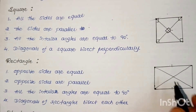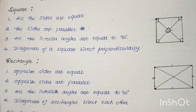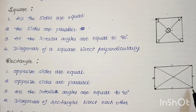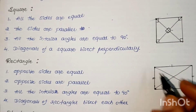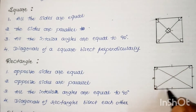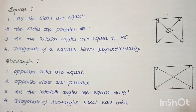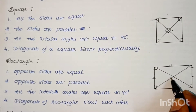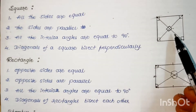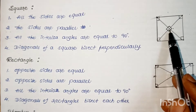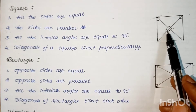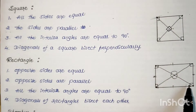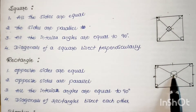In a rectangle, opposite sides are equal and parallel, and all interior angles are equal to 90 degrees. The diagonals of a rectangle bisect each other, but they do not bisect perpendicularly — the angle formed at the intersection is different from 90 degrees, unlike in a square.